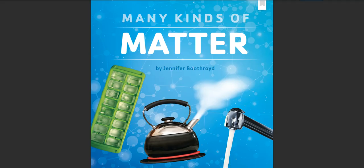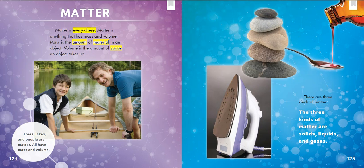Many Kinds of Matter by Jennifer Boothroyd. Matter is everywhere. Matter is anything that has mass and volume. Mass is the amount of material in an object. Volume is the amount of space an object takes up. Trees, lakes, and people are matter — all have mass and volume.